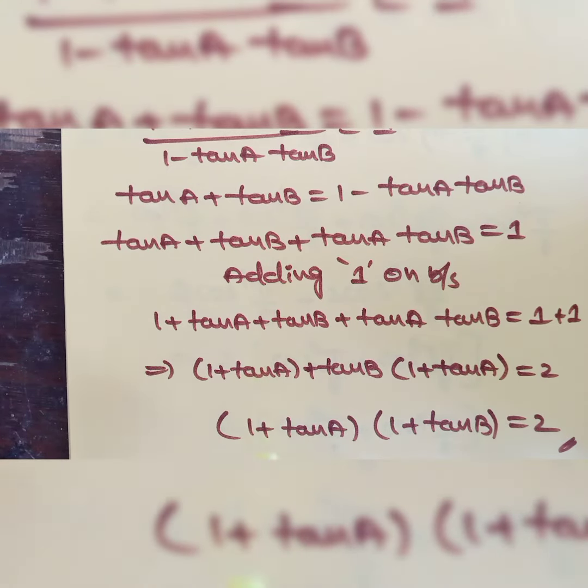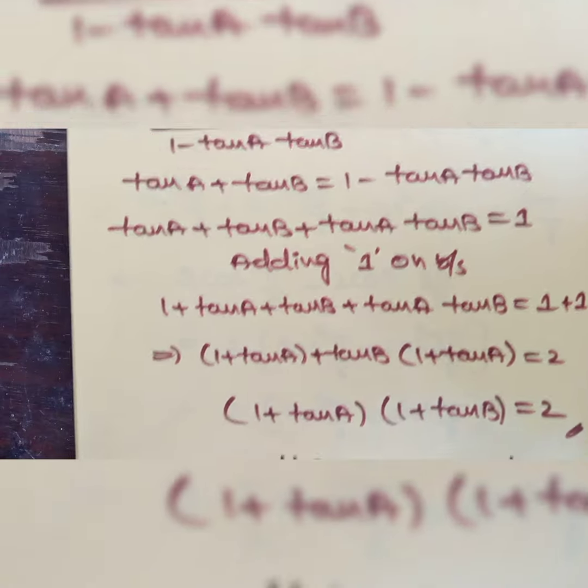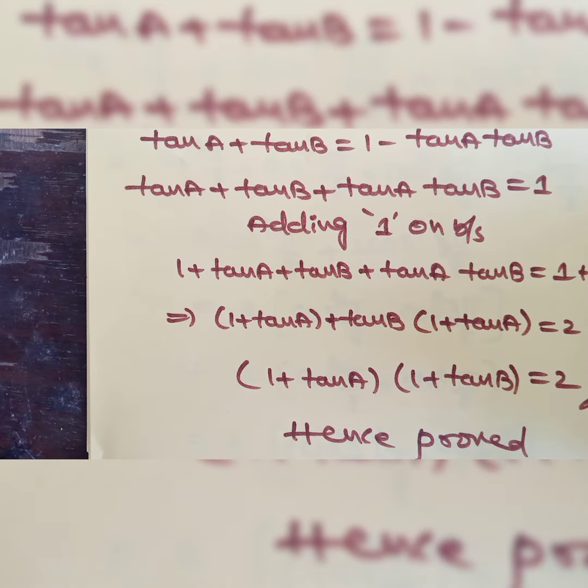Two times it is there. So we are writing (1 plus tan A) times (1 plus tan B) is equal to 2. Hence proved. Thank you.